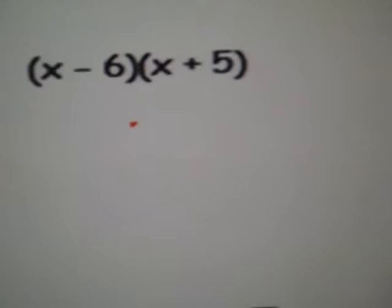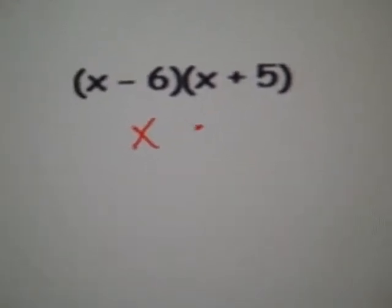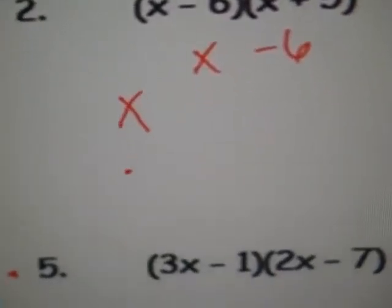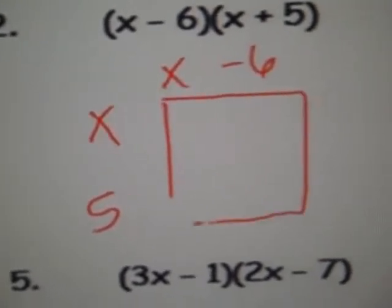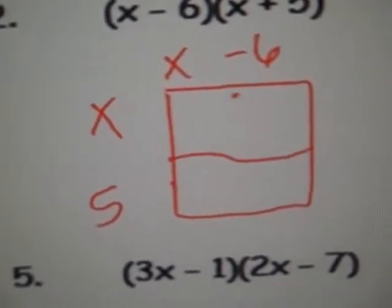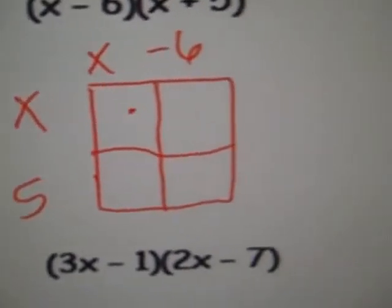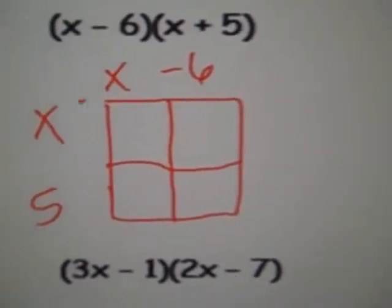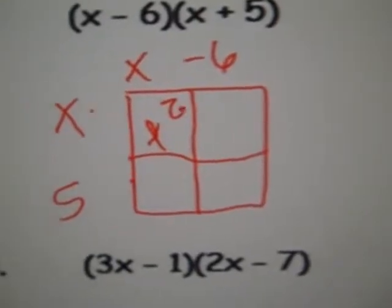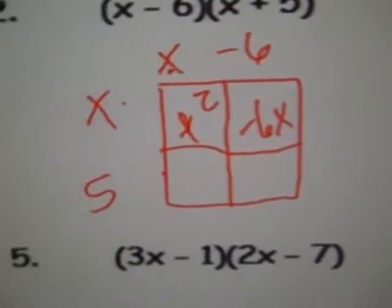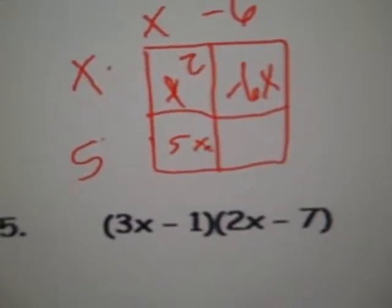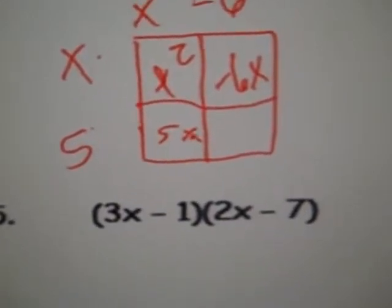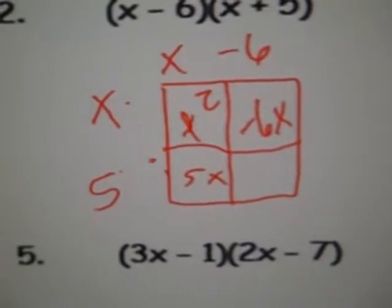Now number 2, let's do this one with the box. x minus 6 on top. And then x, 5 on the left side. And let's draw a box. Put 4 boxes. You should have 4 terms at the end of this. x times x, x squared. Negative 6 times x, negative 6x. x times 5, 5x. I'm just putting the numbers first and then the x. Then negative 6 times 5, negative 30.